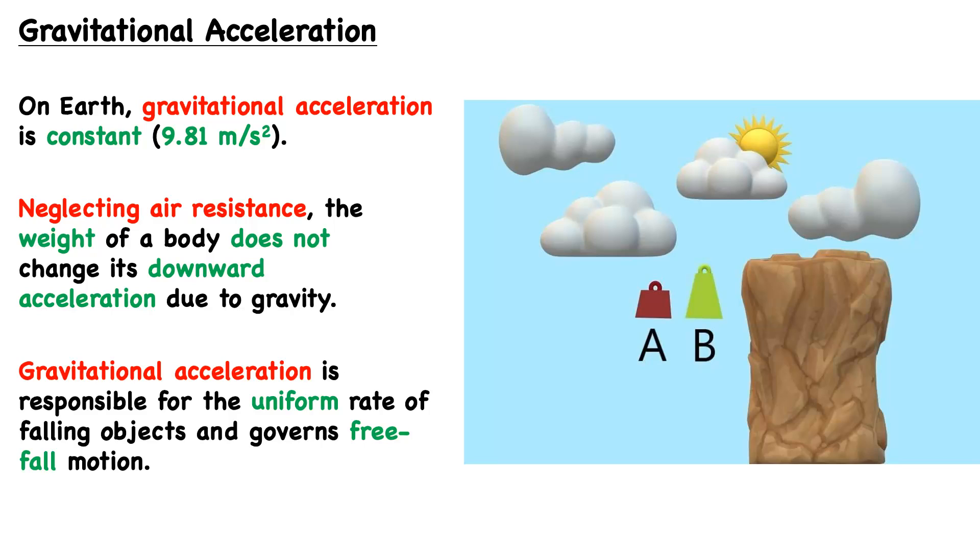If we neglect air resistance, so we're only considering the gravitational force and the gravitational acceleration, the weight actually does not play a role. The acceleration of a body does not change its downward acceleration due to gravity. Gravitational acceleration is what's responsible for the uniform rate of falling objects and is what governs free falling motion.